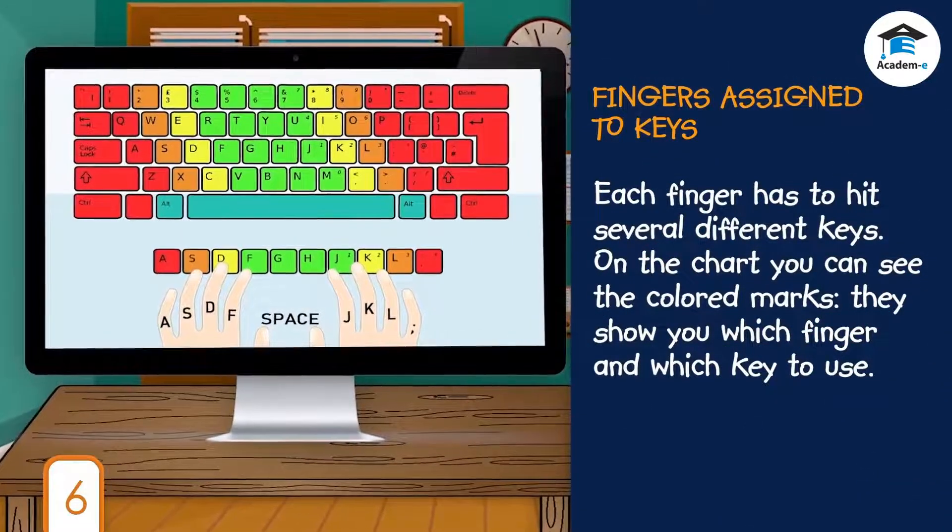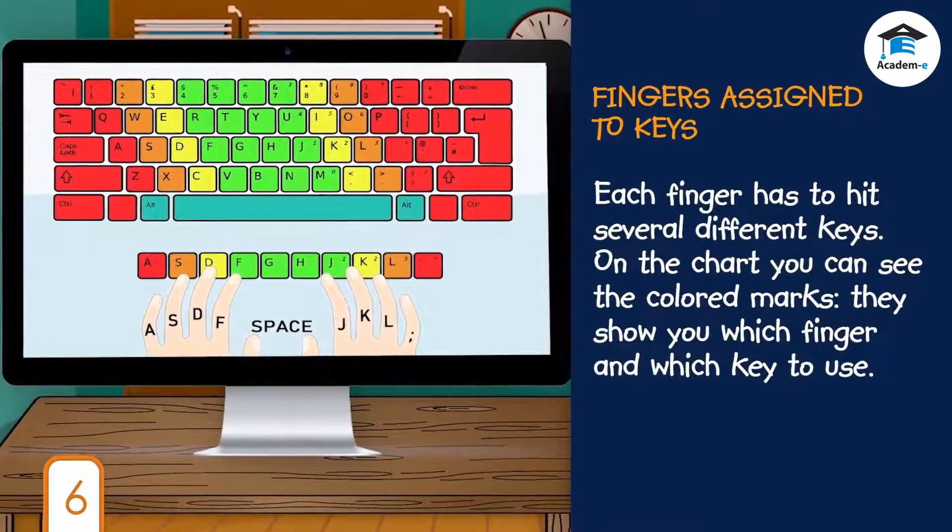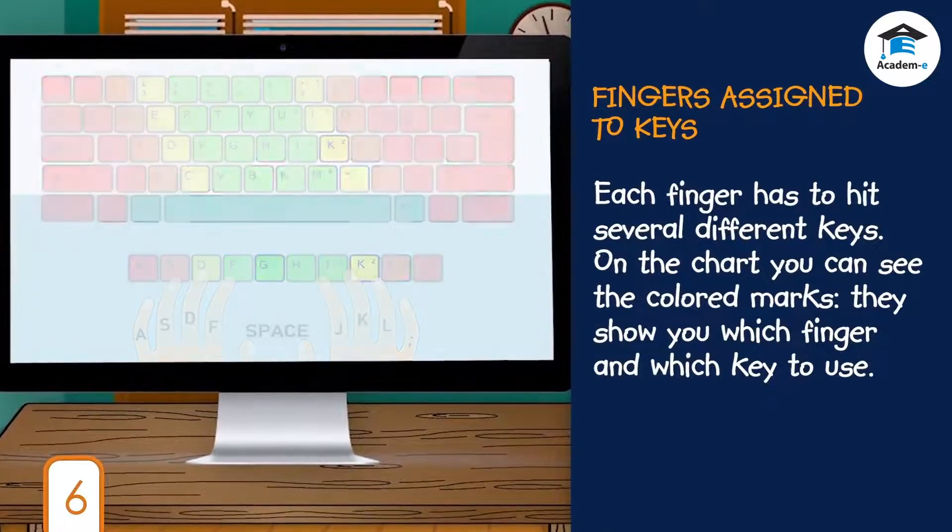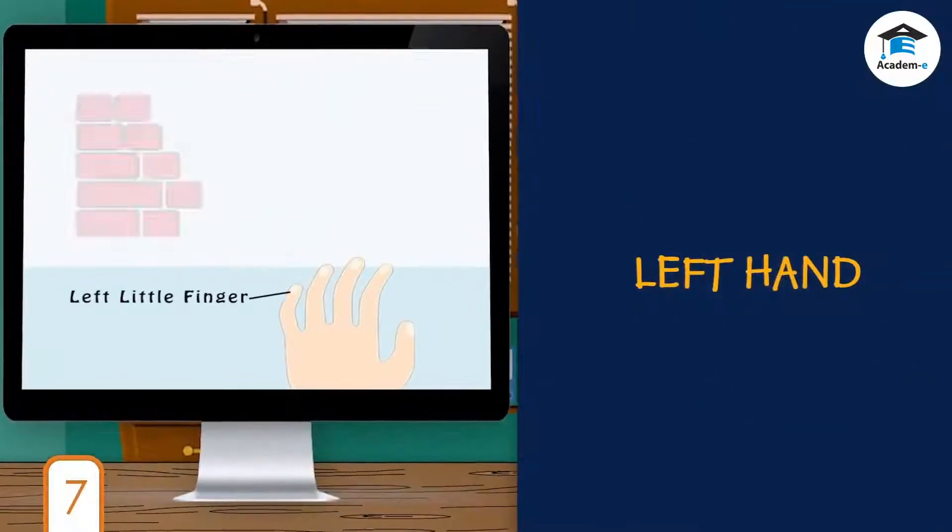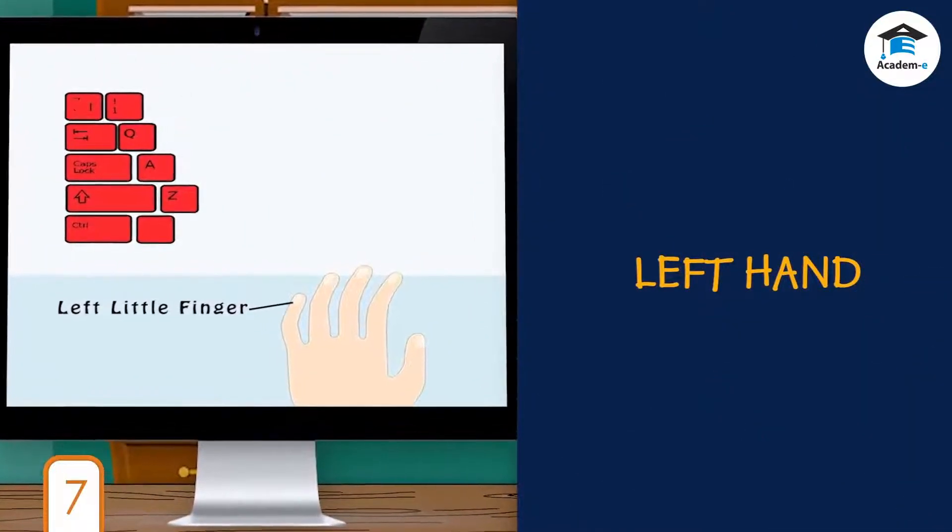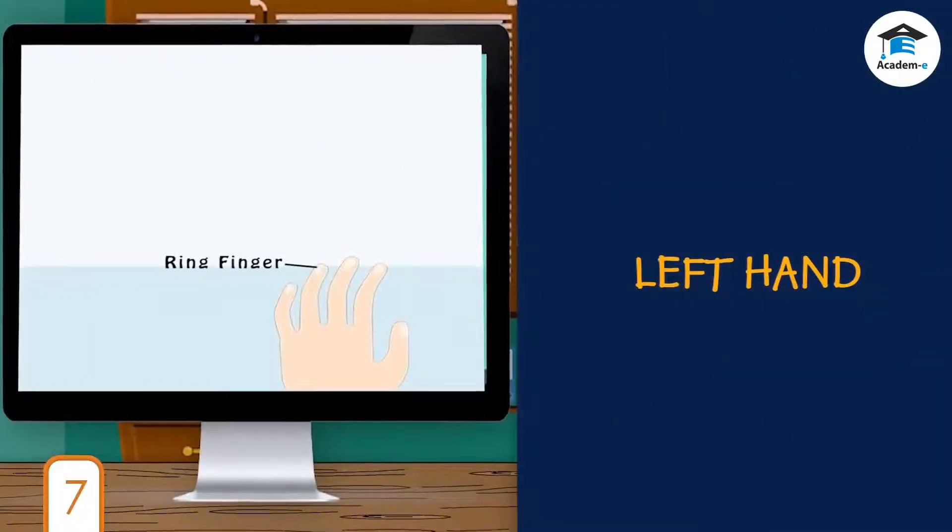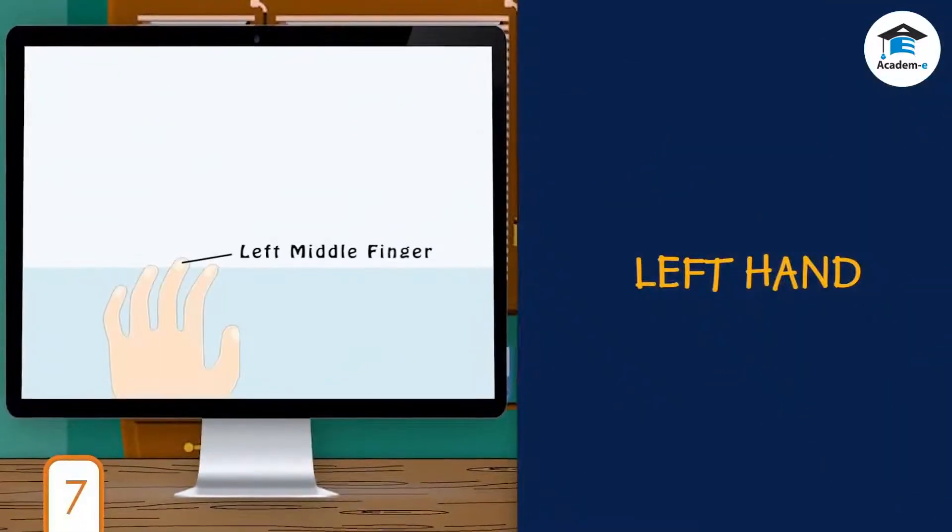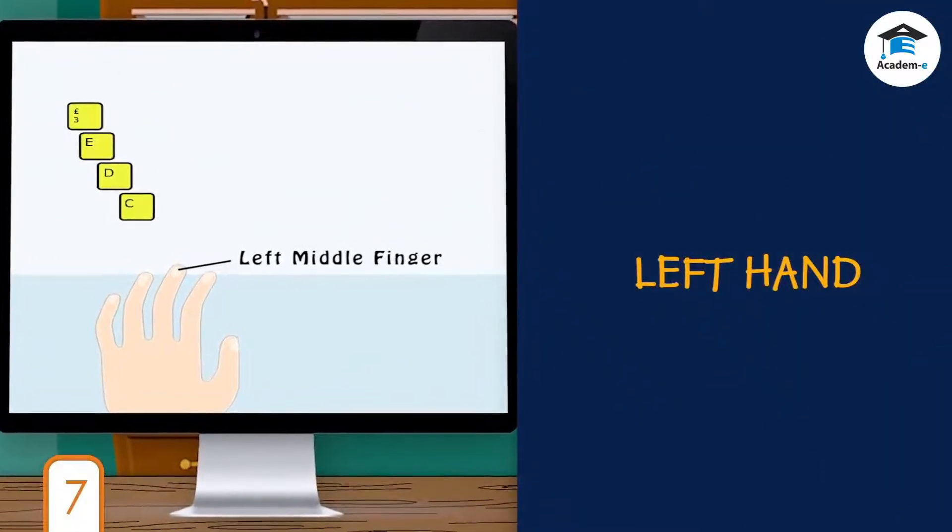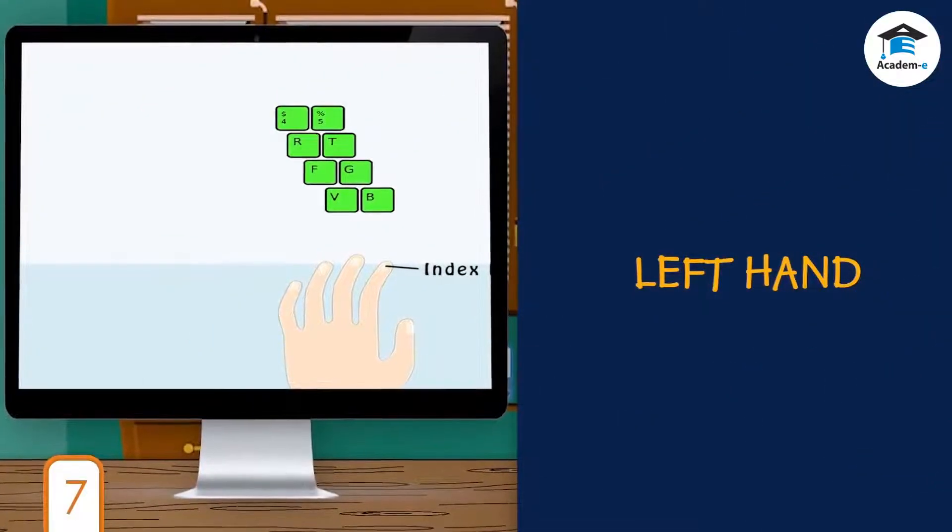Fingers assigned to keys: Each finger has to hit several different keys. On the chart you can see the colored marks; they show you which finger and which key to use. Left hand keys: left little finger, left ring finger, left middle finger, left index finger.